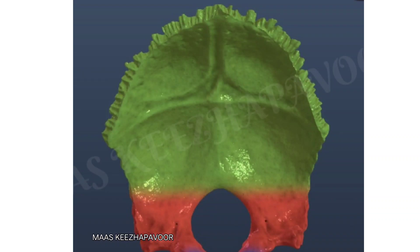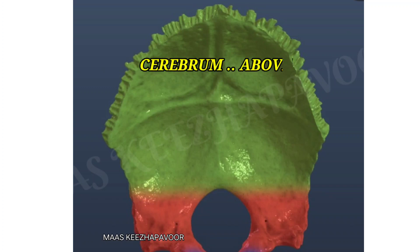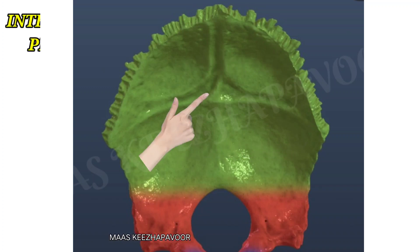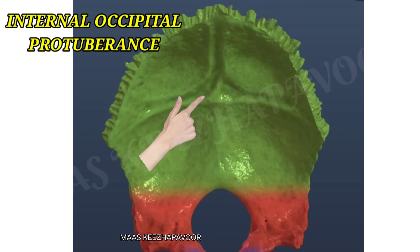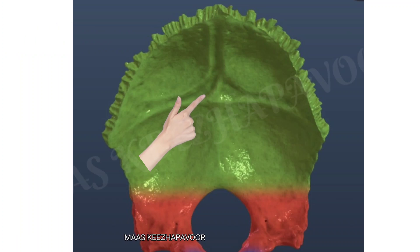The internal surface of the squamous part is concave. It is related to the cerebrum above and the cerebellum below. The internal occipital protuberance is a rounded bony projection in the center of this surface.